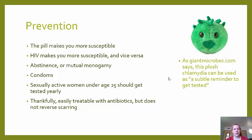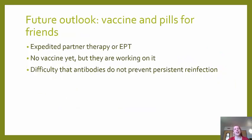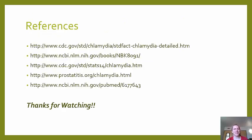Chlamydia is easily treatable with antibiotics, but antibiotics do not reverse any scarring that has occurred — so repeated infections over a lifetime can cause permanent scarring and infertility. As giantmicrobes.com notes, a plush Chlamydia toy can serve as a subtle reminder to get tested. Future outlook: there is no vaccine yet, though one is being researched. The CDC is also working on expedited partner therapy, providing enough antibiotics for both the patient and their partner. The difficulty remains that antibodies produced by the body do not prevent persistent reinfection.